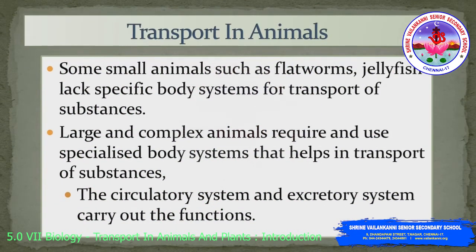Small animals such as flatworms and jellyfish lack a specific body system for transport of substances such as gases. Thus, the diffusion of gases takes place through the body surface. Whereas large and complex animals require and use specialized body systems that help in the transport of substances. The circulatory system and the excretory system carry out the function of transport in large and complex animals.